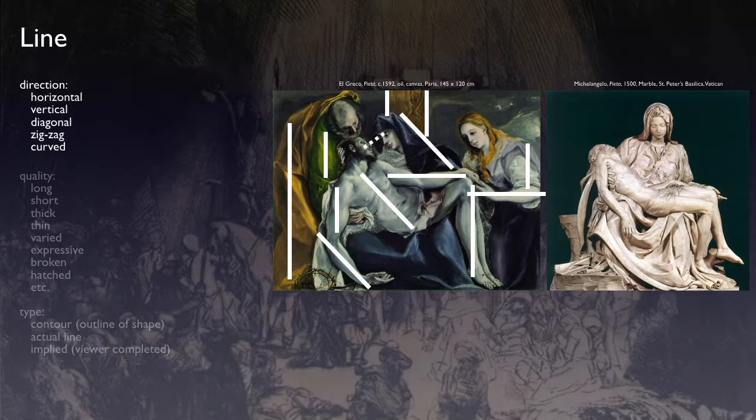The other type of line is zigzag or curved. Even though I haven't designated some curved lines, there are many curved lines within it. And now moving on to the Michelangelo.